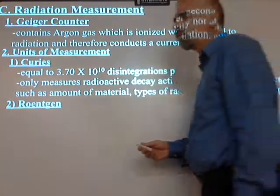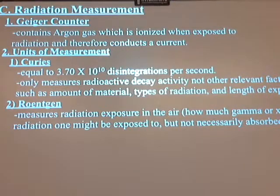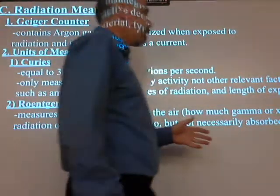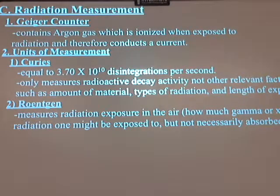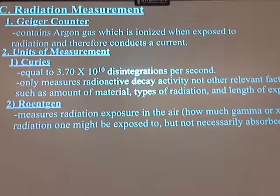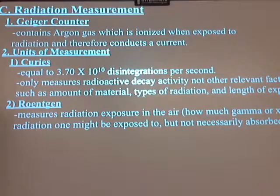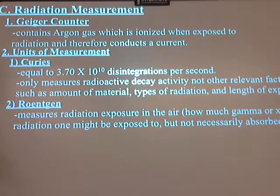So Curies is just a basic term, and we're going to have to get better than that to understand how radiation really affects us. The Roentgen measures the radiation exposure in the air — how much gamma or x-ray radiation you might be exposed to, not necessarily absorbed but at least exposed to. Power plant operators, like at the plant up the river here in Berwick, probably walk around with what's called a dosimeter on them.